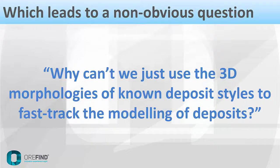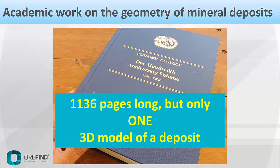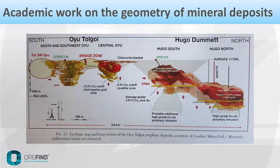Which leads to a non-obvious question: why can't we just use the 3D morphologies of known deposit styles to fast-track the modeling of deposits? Well, let's look at the 3D morphology of mineral deposits in the academic literature. This is the 100th anniversary volume of Economic Geology published in 2005 — a very thick book, over 1,000 pages long, but only one three-dimensional model of a deposit. And this is it — the Oyutogoi deposit. It doesn't really explain what's happening with this deposit. So this is basically a bible of mineral deposit styles, and there's only one 3D illustration. This is a pattern in the academic literature.